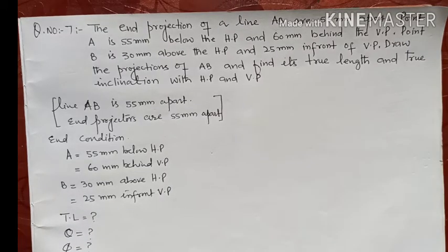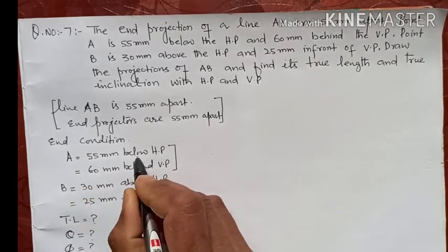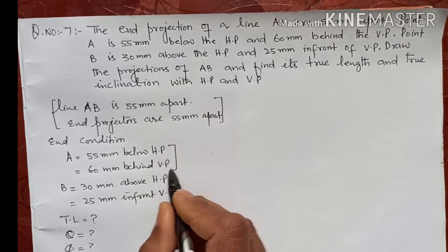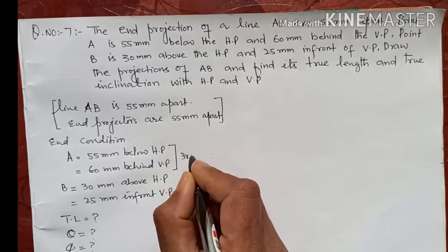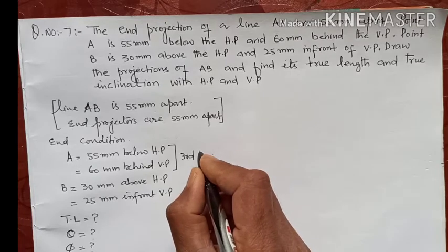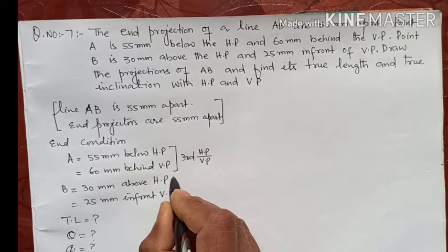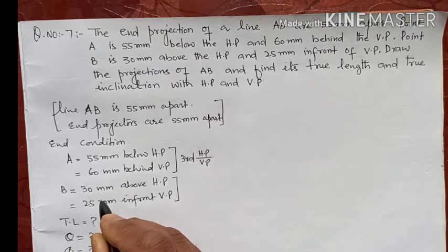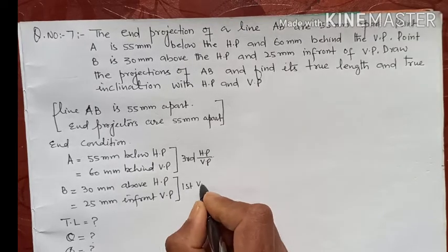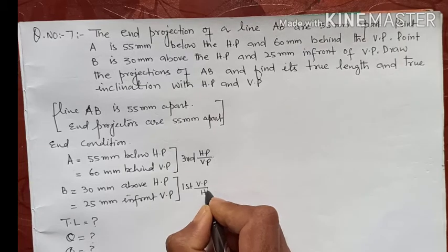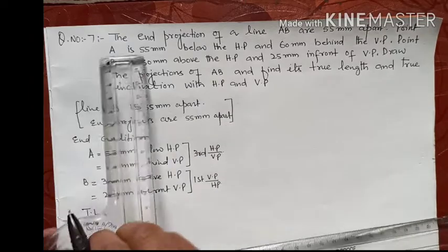First we need to understand the quadrant for each point. Point A is below HP and behind VP, which places it in the third quadrant — where HP is above and VP is below. Point B is above HP and in front of VP, which places it in the first quadrant — where VP is above and HP is below.